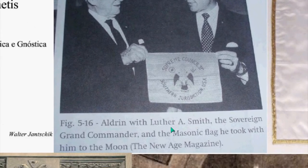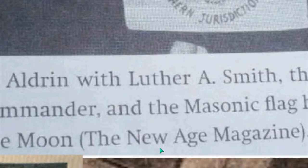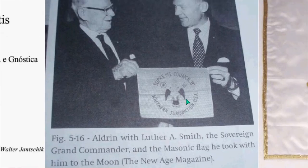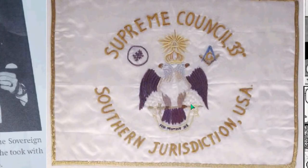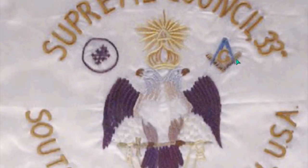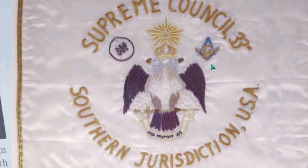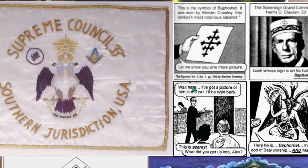Buzz Aldrin with the flag that apparently went to the moon — and this was on the New Age magazine. Here's the flag in its presentation. This is the flag with the sigil of Baphomet, the double-headed eagle with that crown and that 33-degree emblem, and the square and compass of Freemasonry with that G — the generative principle — and their concept of dualism in that fashion.